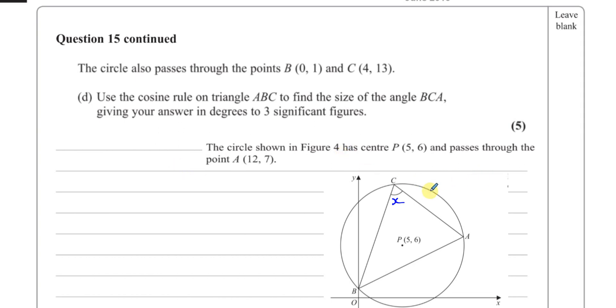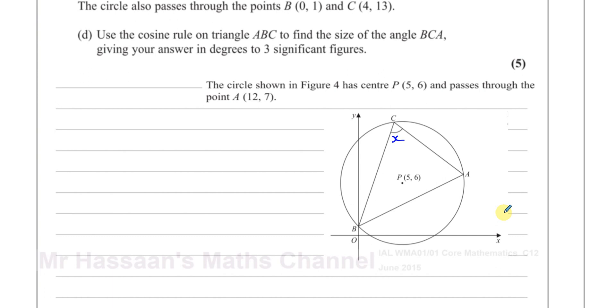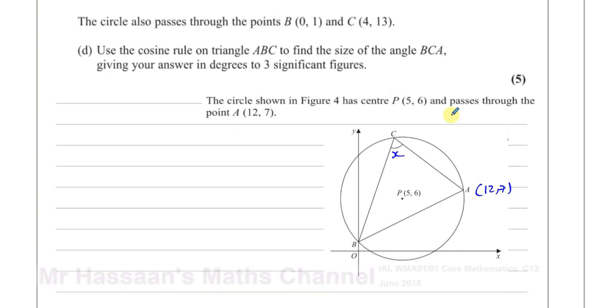So the circle shown in figure 4 has a center P(5,6) and passes through the point A(12,7). So I know the coordinates of this point is 12, 7. And I know that the coordinates of B are 0, 1. So B over here is 0, 1. And C, the coordinates of C, 4, 13.